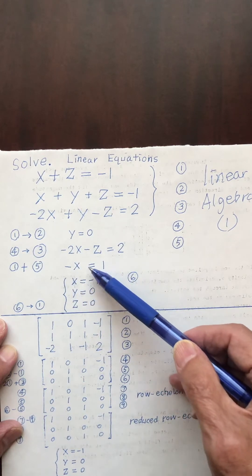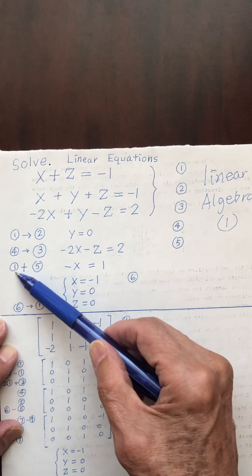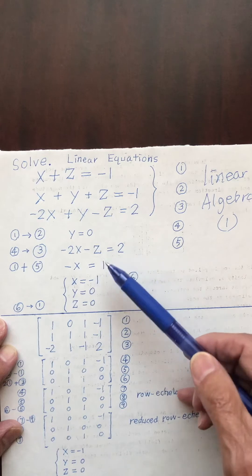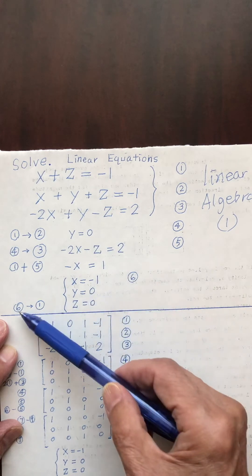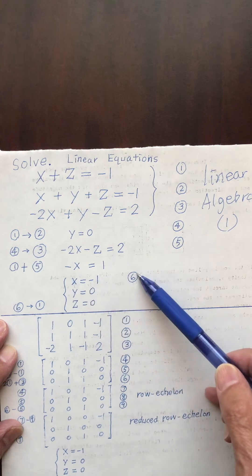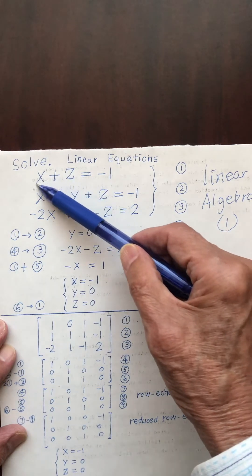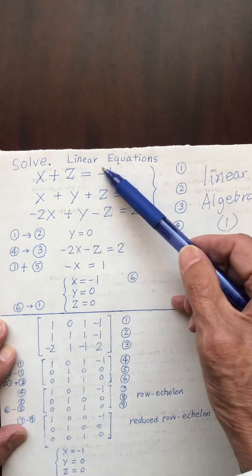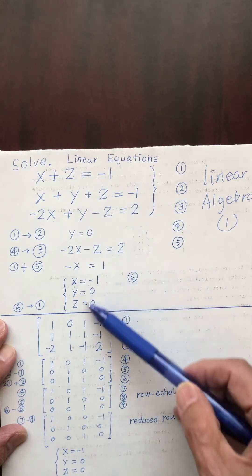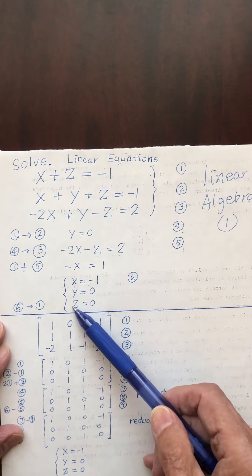That is the result of adding equation one and equation five: negative x equals one, so x equals negative one. And y equals zero. I call this equation six. I put equation six into equation one: x is negative one, so negative one on the left cancels negative one on the right, which means z is zero. So the result is x equals negative one, y equals zero, z equals zero.